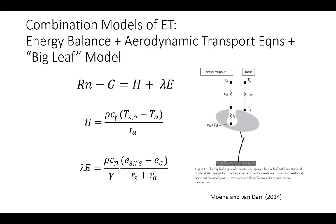These Penman-Monteith equations are a combination model. You take the energy balance equation — Rn minus G equals H plus LE — you write your two aerodynamic equations for sensible heat flux H and latent heat flux LE, and you assume a simplified big leaf model, as shown in the diagram on the right. We combine all those ideas together to arrive at our combination equation for the surface energy balance, which we covered in a previous video.